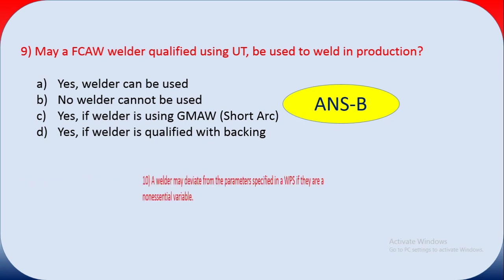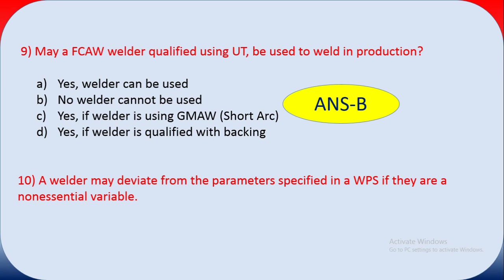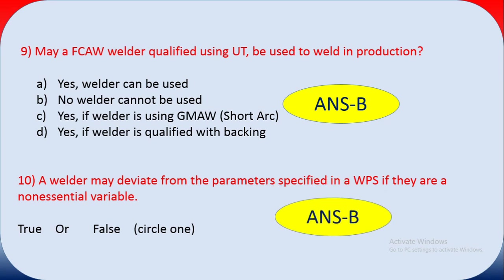Question ten: a welder may deviate from the parameters specified in a WPS if they are a non-essential variable — true or false? A welder doing welding must maintain the parameters specified in the WPS. If there is a non-essential variable not mentioned in the WPS, the answer is still false — you may not deviate.